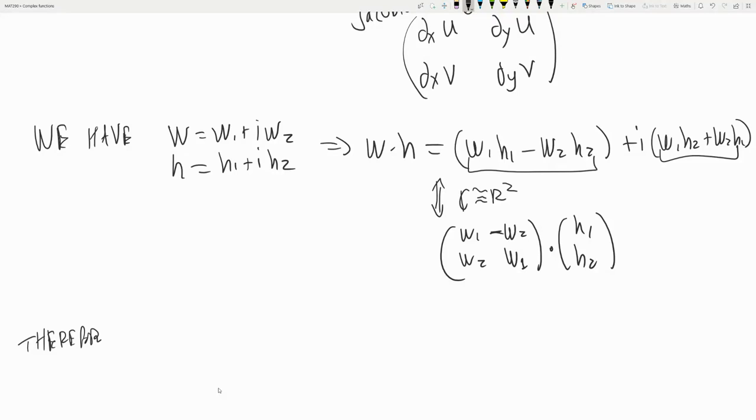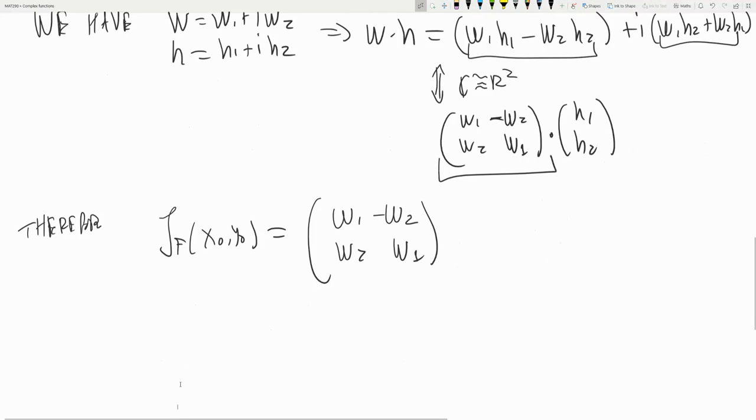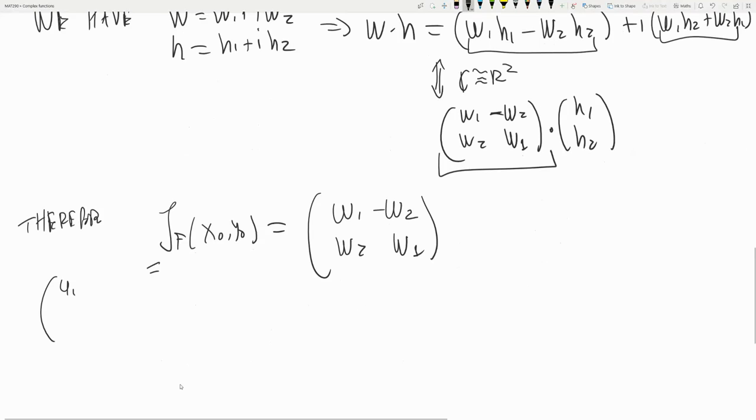By equating the two expressions, we have the Jacobian of f at (x0, y0) equals this matrix. And what is this guy? This was ux, uy, vx, vy.